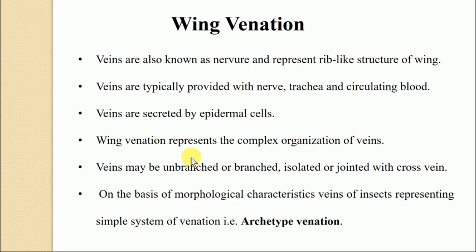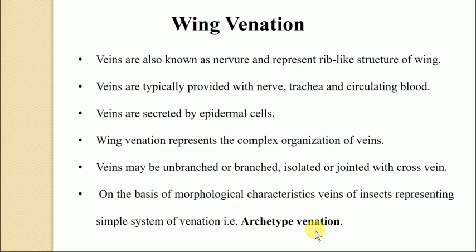The veins are secreted by the epidermal cells through deposition of cuticular material above and below the wing pads, known as lacuna, only at the final stage of the molting of the adult. The wing venation represents a complex organization of veins within the wing and is commonly referred to as wing venation. The veins may be unbranched, branched, isolated, or jointed, and may join one another by cross veins. On the basis of morphological characteristics, the most ancient insects represent a simple system of venation referred to as archetype venation.